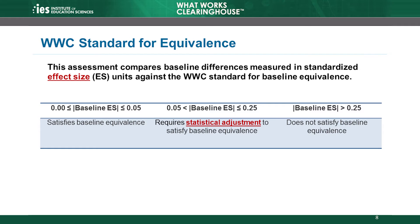This slide illustrates the standard. If the absolute value of the effect size at baseline is between 0 and 0.05 standard deviations, then we say that the groups are equivalent. If the absolute value of the effect size at baseline is larger than 0.05 and less than or equal to 0.25 standard deviations, then the WWC says that the study must use a statistical adjustment in the analysis to demonstrate equivalence. A statistical adjustment allows the analysis to account for the differences between groups observed at baseline. And finally, if the baseline difference is greater than 0.25 standard deviations, then the WWC says that it does not demonstrate equivalence — the baseline differences are too large for the study to address with a statistical adjustment.